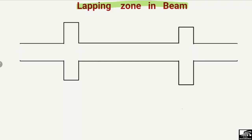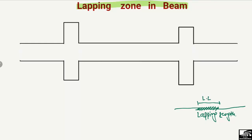Lapping means that if you have one steel bar placed in a beam, and you place another bar alongside it to effectively make one continuous bar, the overlapping length between them is known as the lapping length. According to different standards, they provide different values for this lapping length — columns have different values, beams may have different values, and footings may have different values.